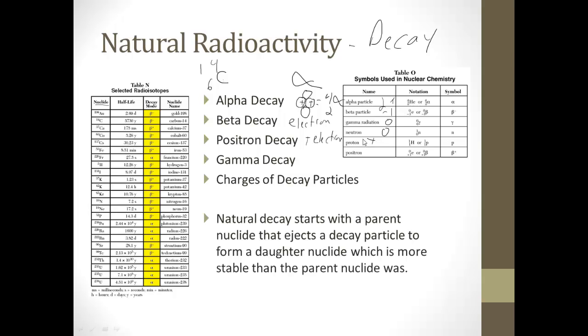Let's take a look. Okay, so natural decay starts with a parent nuclei that ejects a decay particle to form a daughter nuclei, which is more stable than the parent was. So, like here, carbon-14 is going to undergo beta decay. It's going to lose 2 protons and 2 electrons, and it's going to form something new.